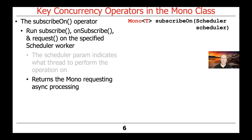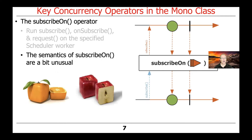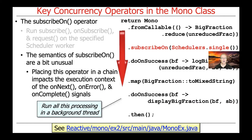The subscribeOn method returns a Mono, which is requesting async processing. The semantics here are a little bit unusual, and it takes a little while to get your head around how subscribeOn works. I'll try to break it down with a short example now, and then we're going to look at a more detailed example later.